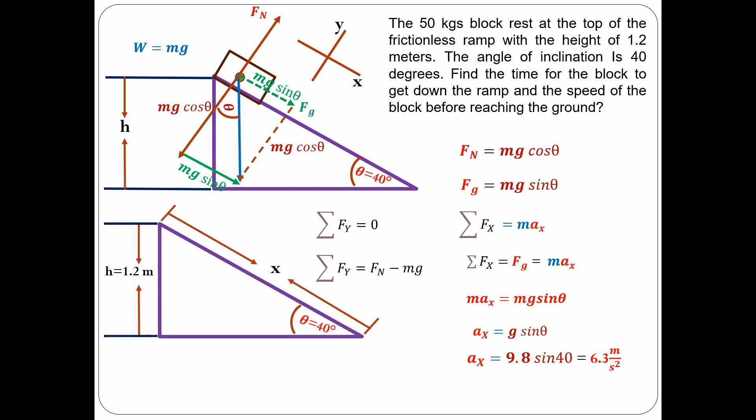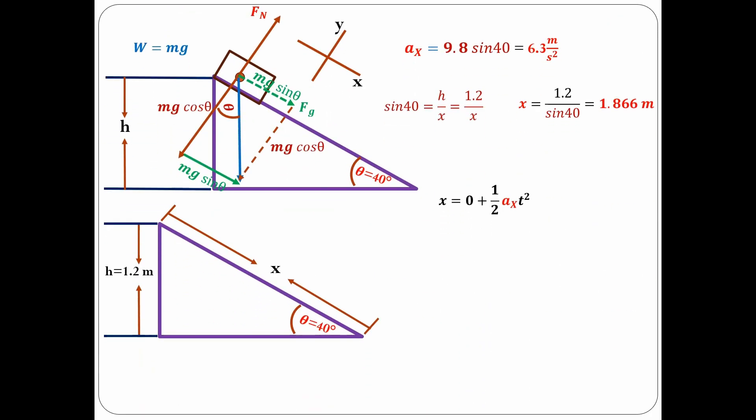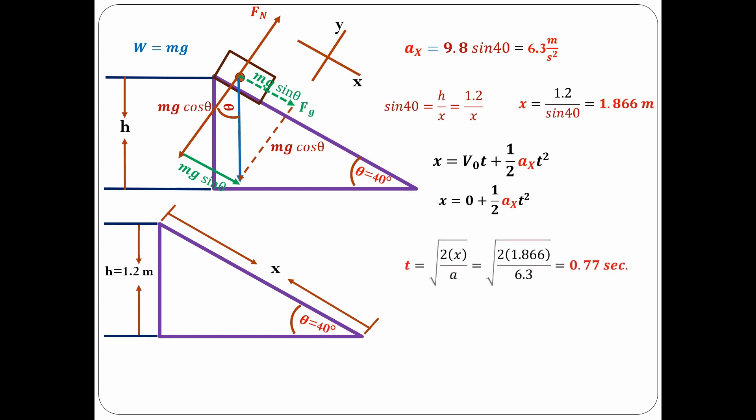Now let's draw another triangle. We need to solve for x, the distance the block traveled. Using trigonometry, x equals 1.866 meters. Now we use the kinematic formula: x equals initial velocity times t plus one half Ax times t squared. Solving for t, we get t equals 0.77 seconds.